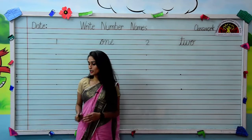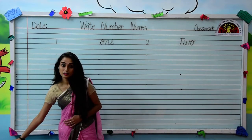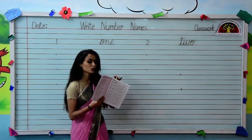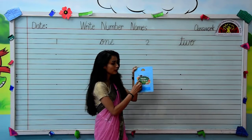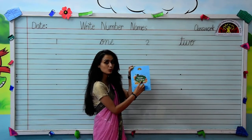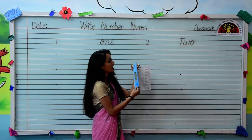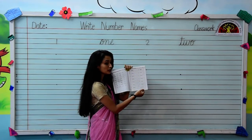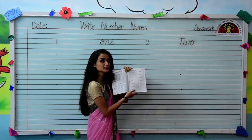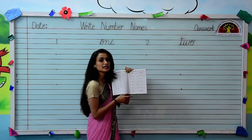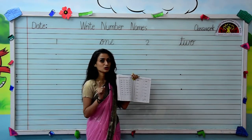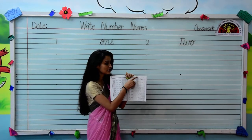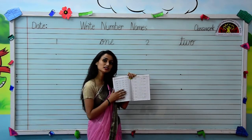So today we will learn number names of 1 and 2. Take out your maths workbook and open your page number 33. Kids, do not forget to mention date and classwork on the top.